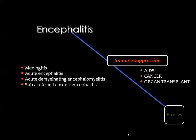Viruses in the brain may affect the meninges, resulting in meningitis; affect the brain parenchyma, resulting in encephalitis; or affect both, resulting in meningoencephalitis. One form of viral infection of the brain is known as acute demyelinating encephalomyelitis, or ADEM, and there are other forms of subacute and chronic encephalitis.